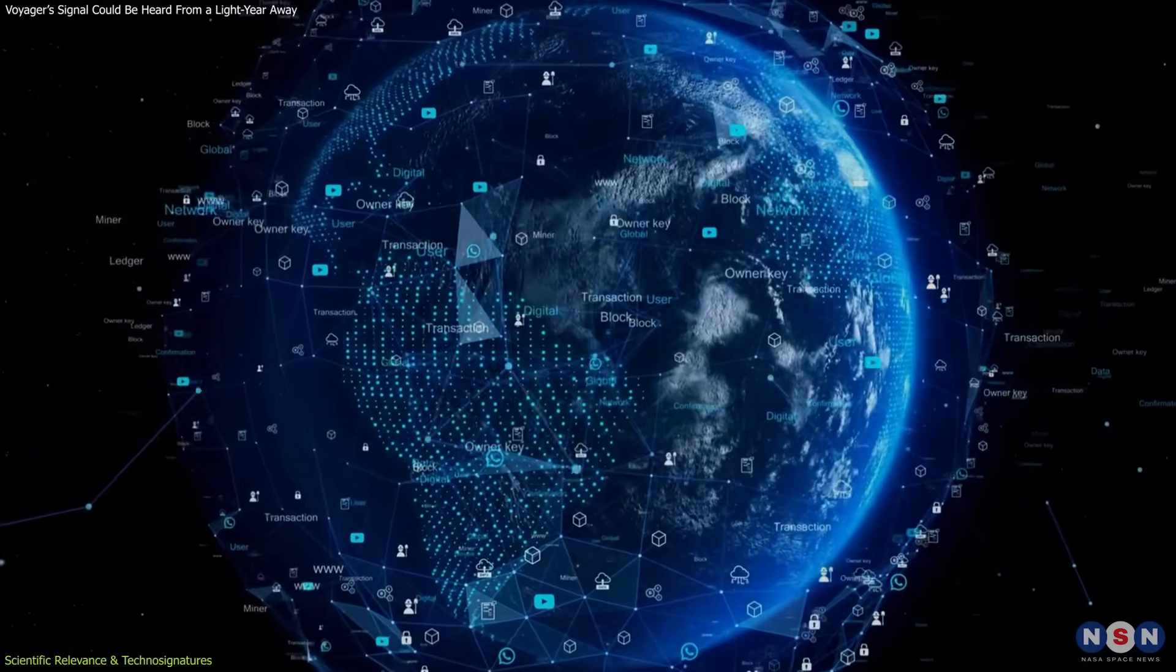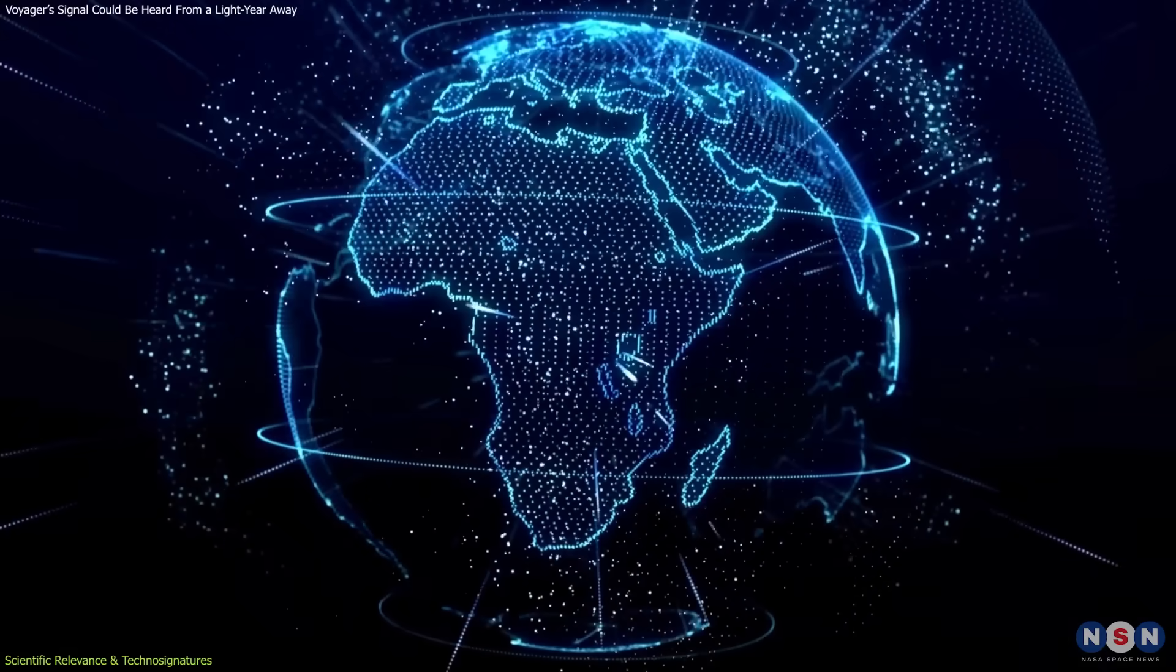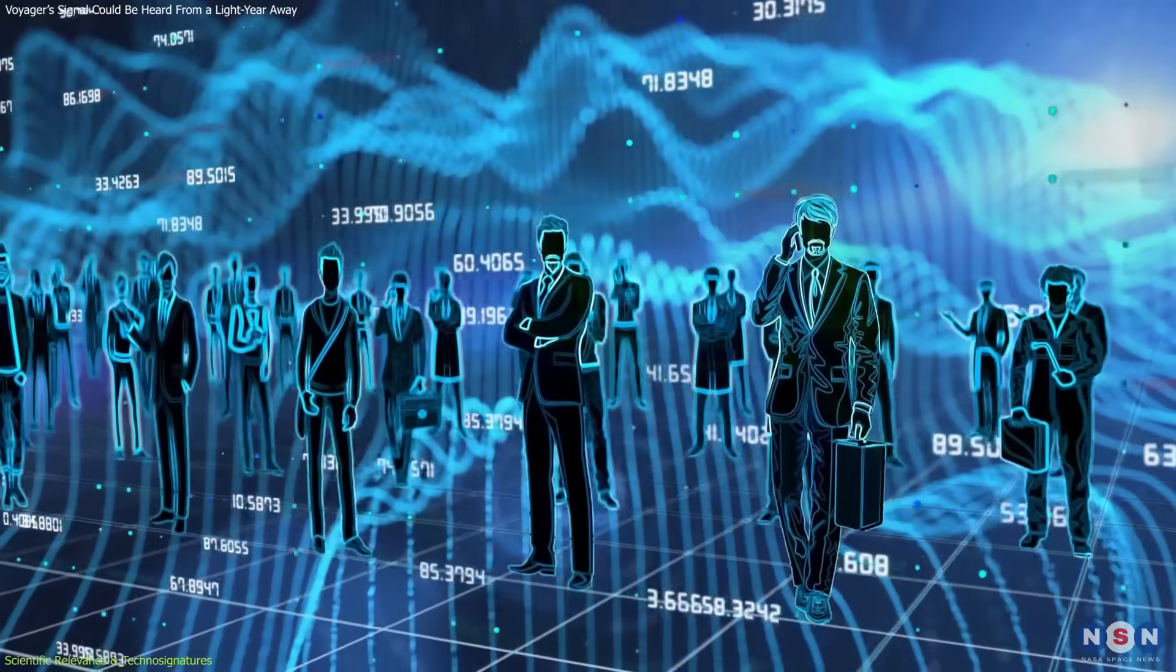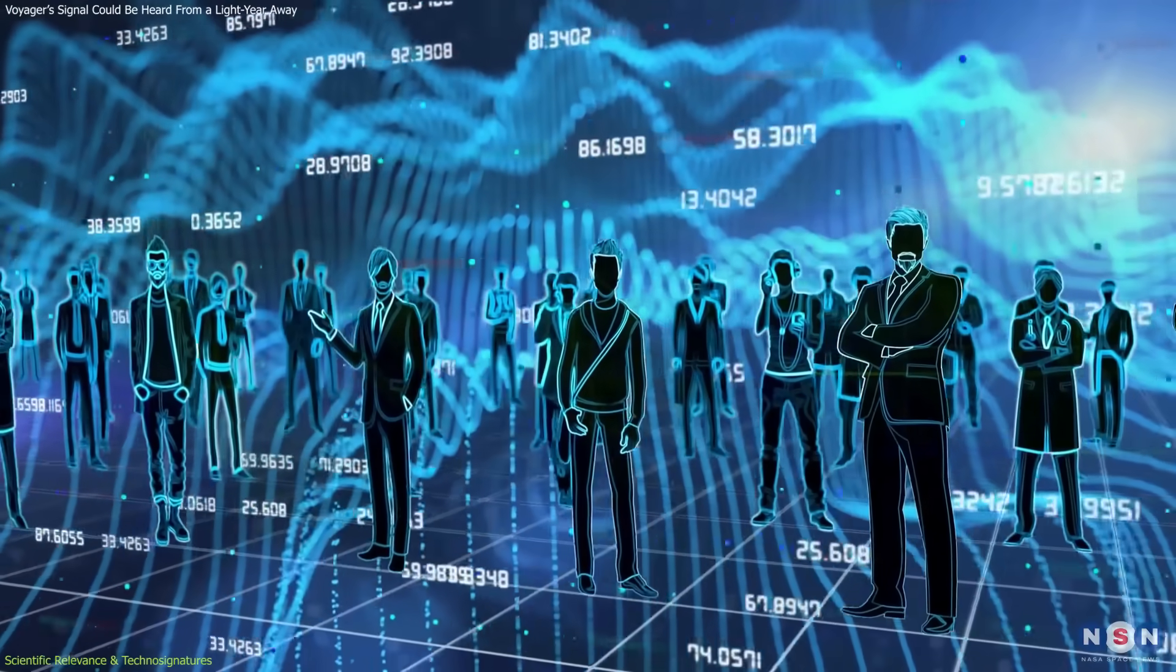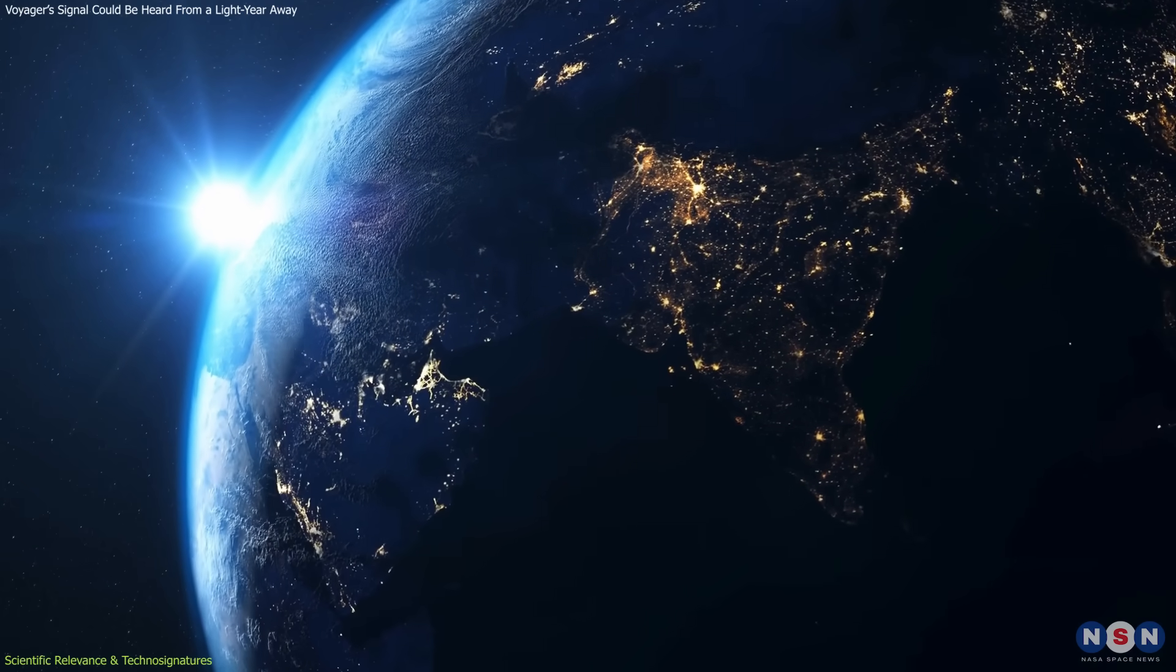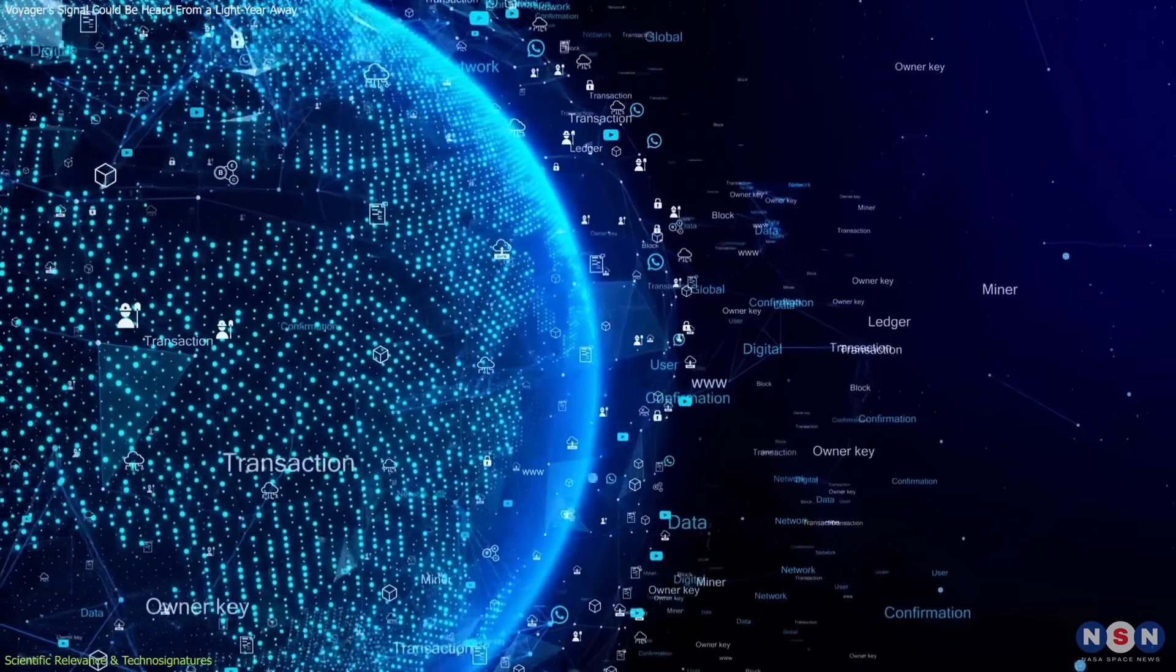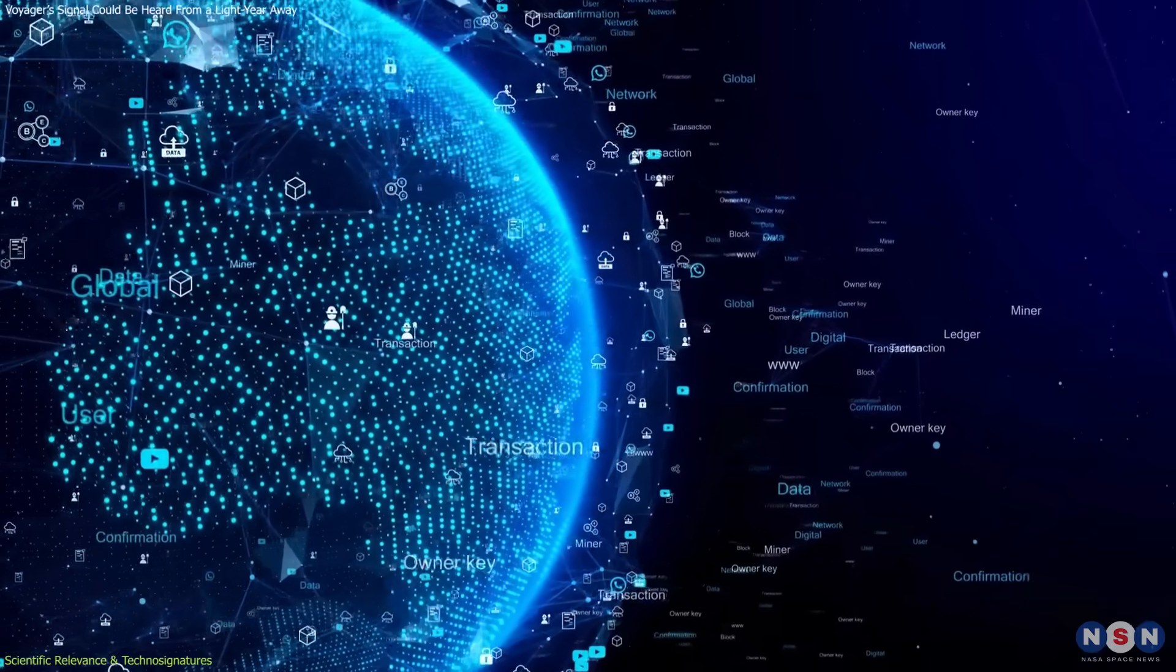These emissions are not intended for space. They're part of our routine infrastructure, but they leak out nonetheless. That leakage forms a type of passive technosignature, a footprint of activity, not intention. The takeaway is that Earth has already been broadcasting its presence for nearly a century, not through deliberate messages, but through daily use of technology.